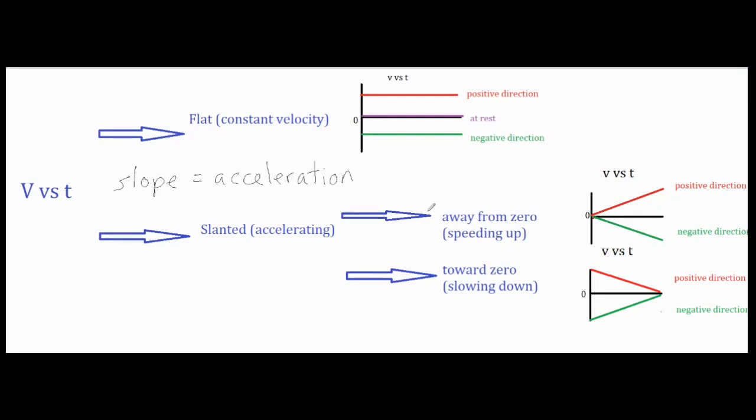So again, you want to take a look at is it moving away from zero or towards zero if you're trying to differentiate between speeding up and slowing down. Okay, that pretty much sums it up for velocity versus time graphs. Thanks for watching and listening.